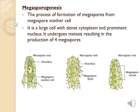Megasporogenesis is the birth of megaspores from the megaspore mother cell. This cell undergoes meiosis and produces four megaspores. The megaspore mother cell first undergoes meiosis I to produce a dyad of cells, and then at the end of meiosis II, the megaspores form a tetrad.